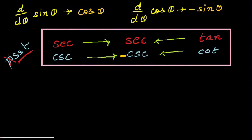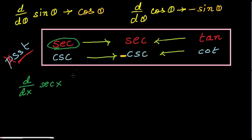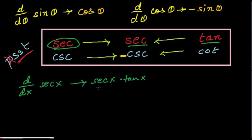So how does this work? It works pretty easily. Let's say you need to find the derivative of secant. The derivative of sec x — get the secant and multiply it by tan, which gives you sec x multiplied by tan x. So the derivative of sec x is sec x multiplied by tan x. You can verify this in your textbook or on the internet — these are 100% accurate.